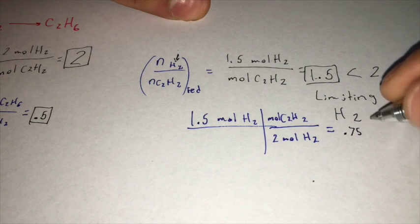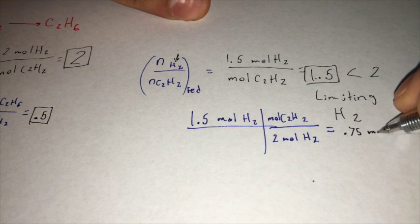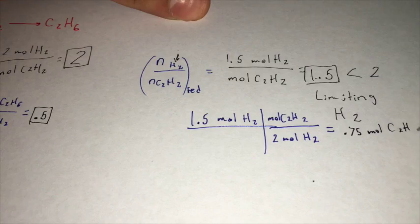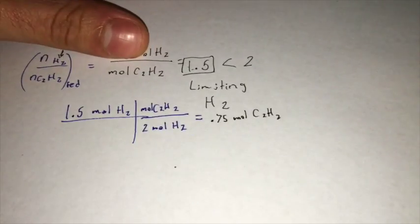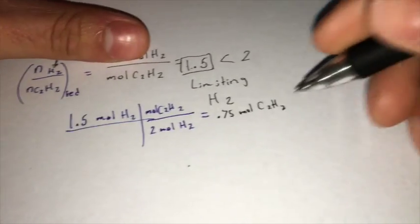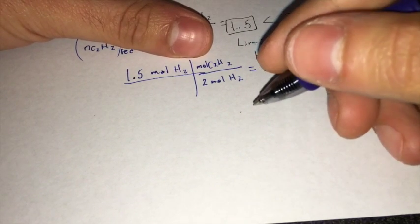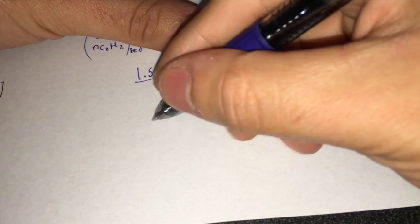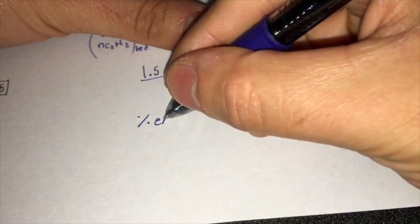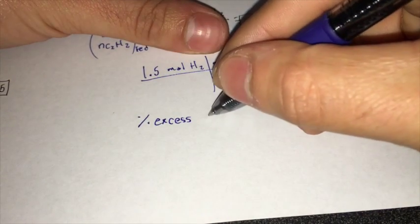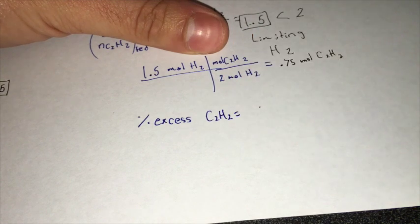That gives us 0.75 moles of C2H2. So we subtract the amount of acetylene required from the amount of acetylene fed to find the percent excess. Percent excess of C2H2 is equal to...